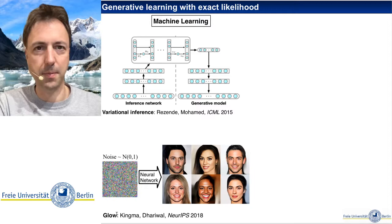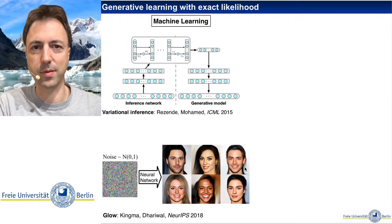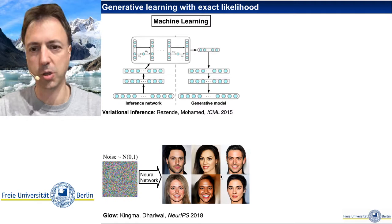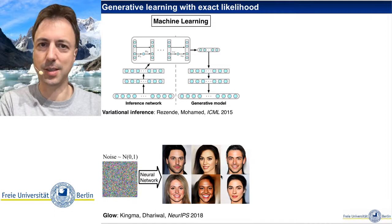In these machine learning applications, we usually have samples from our target distribution given, such as images from a database of celebrity faces, and we then need to infer the probability distribution the samples lie on before being able to sample from it — so we also have a density estimation problem to solve. But sometimes we are also given the target density that we want to sample, for example from an energy-based model.